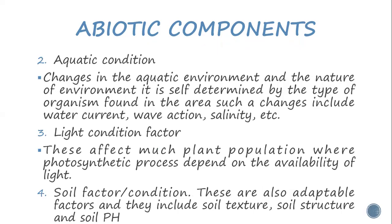Moving on. The second one is the aquatic condition. Changes in the aquatic environment and the nature of the environment are themselves determined by the type of organism found in the area. Such changes include the water current, wave action, salinity, etc. These various changes — like water current, wave action, and salinity — can also determine the type of organisms found within a given area. Here we see how these abiotic, non-living components influence the living biotic components.